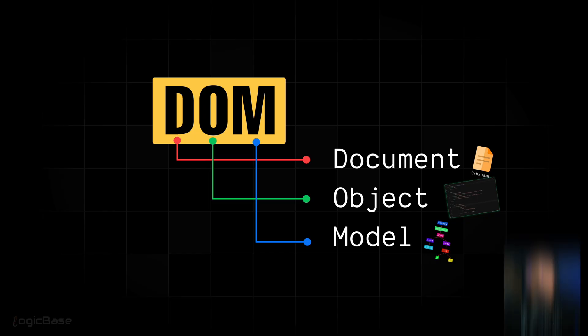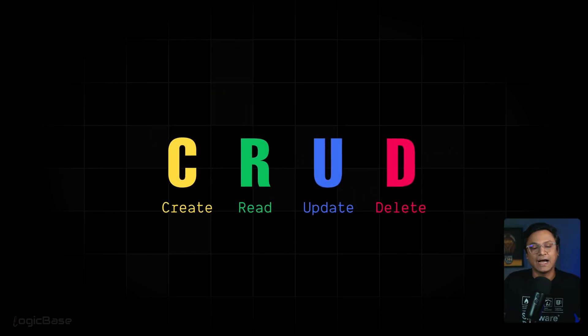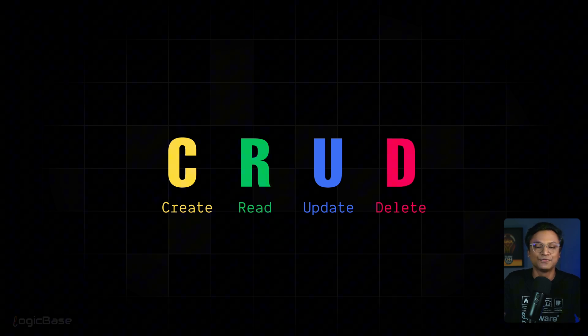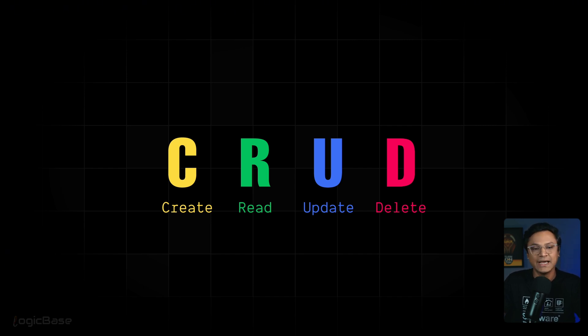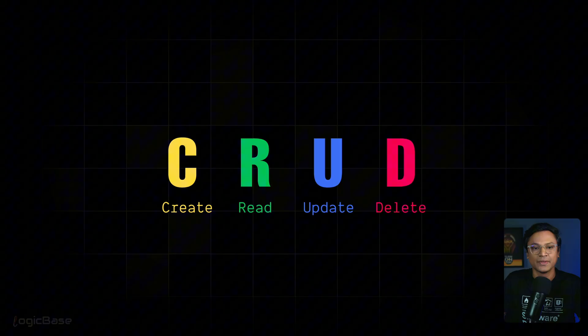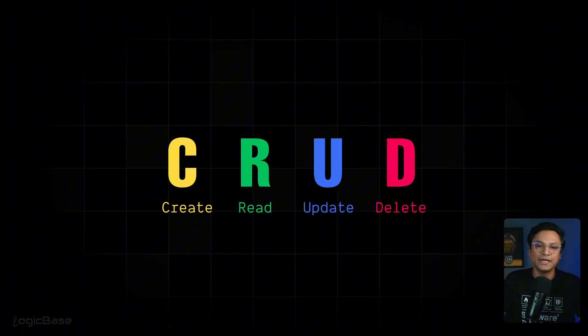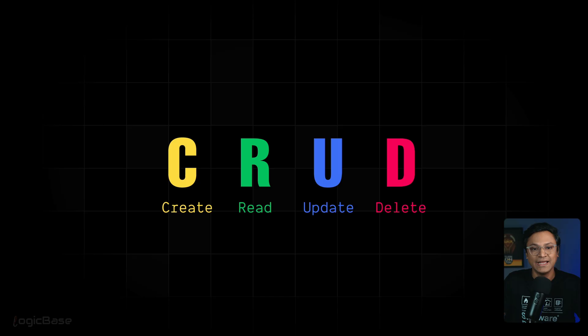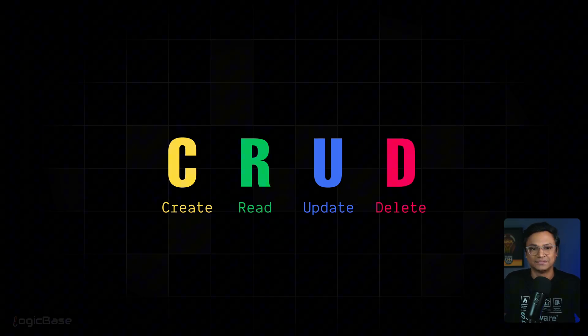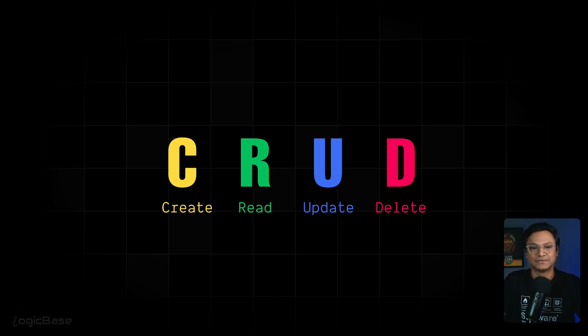When we build a REST API, there are usually four main operations. Create, Read, Update and Delete. Together, these are called CRUD. These CRUD operations are very common. Almost every web application is basically built around these four actions. To put it simply, Create means adding something new. Read means retrieving the data of an element or object. Update means modifying existing data and delete means removing it. The names explain themselves, don't they?